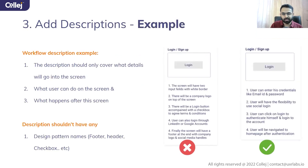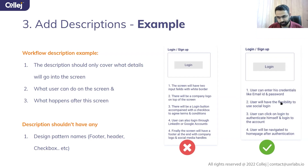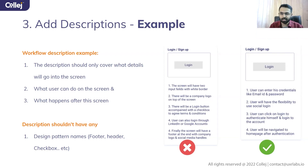Let's look at the examples. On the right-hand side you see the screen name above and the description below. You should never describe UI — like 'the screen will have two input fields with white border' or 'a company logo on top.' Those are UI talks. We are planning the experience, not the UI. For example: 'user can enter credentials like email and password' or 'user will have the flexibility to use social login.' You're describing what a user can do at this particular screen, and the UI solution comes later.